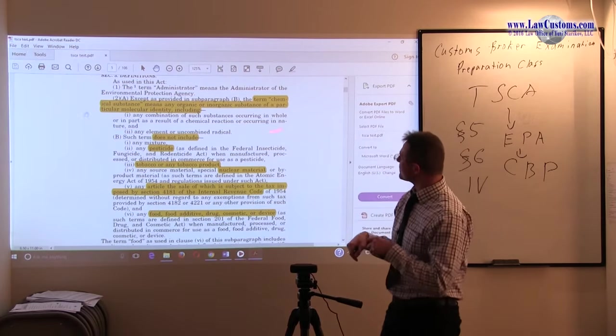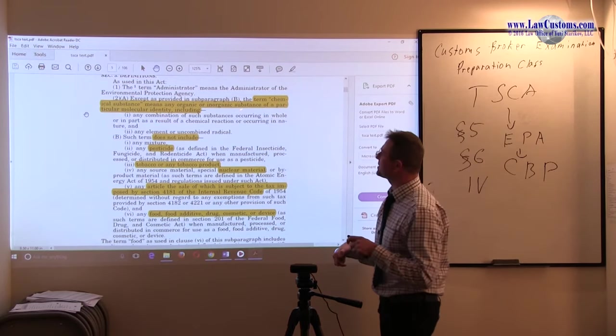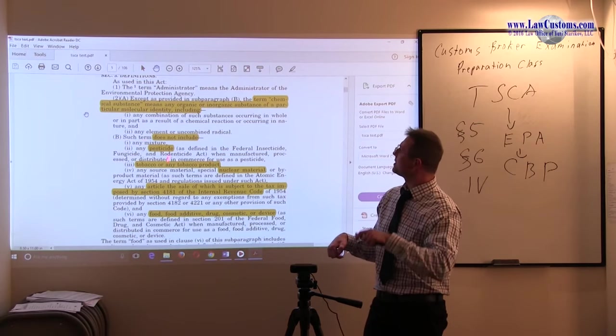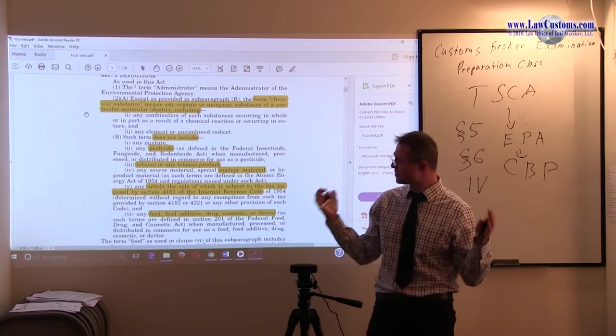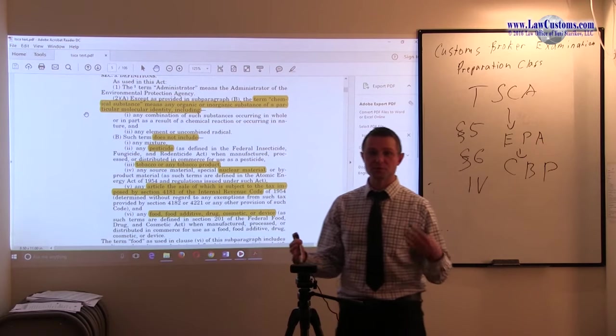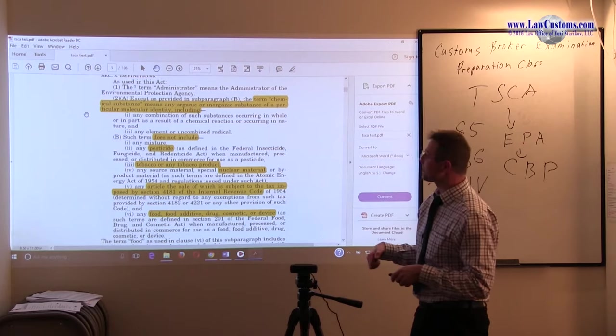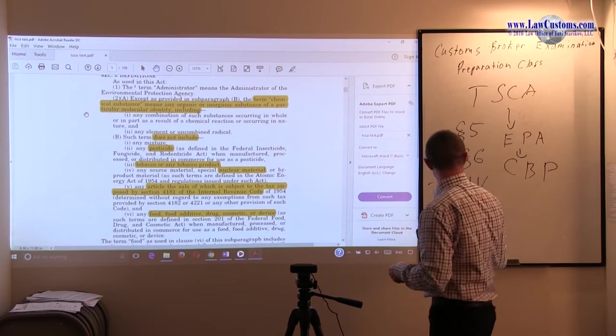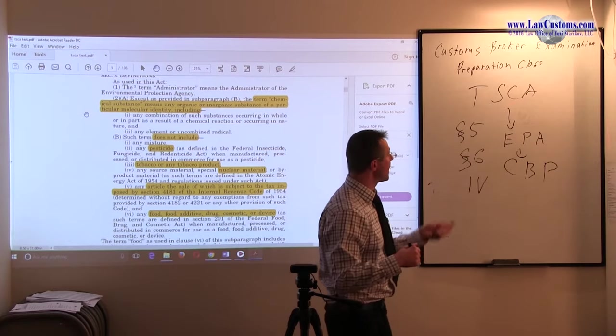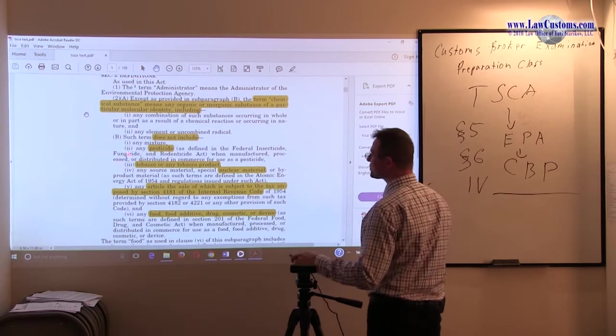The term 'chemical substance' as Congress defined means any organic and inorganic substance of particular molecular identity. It's a very broad definition. The way to understand it is to see what it is not, which is in paragraph B, subparagraph B.